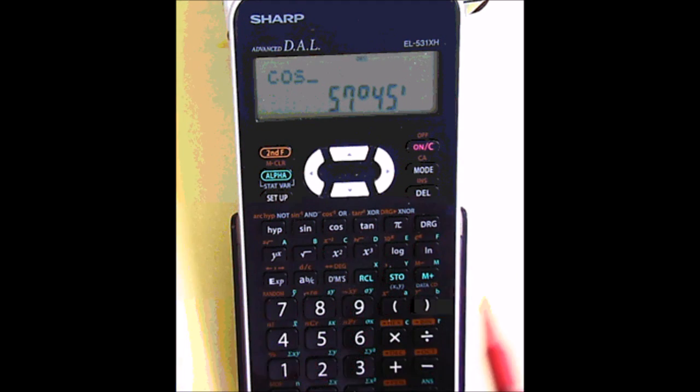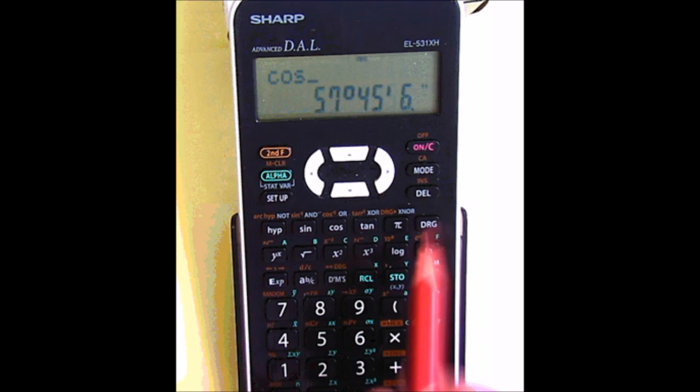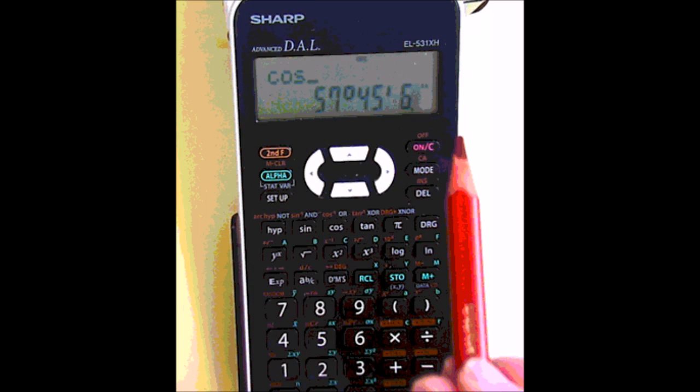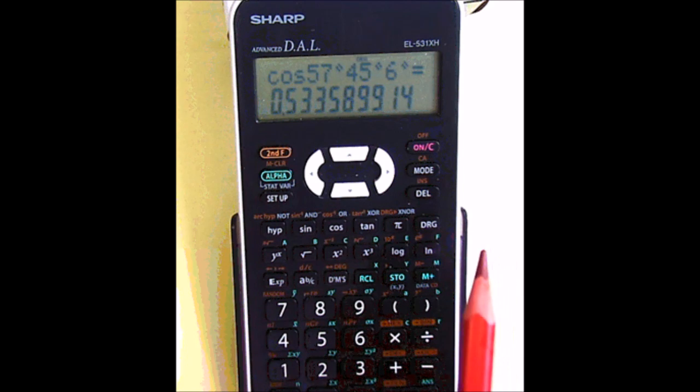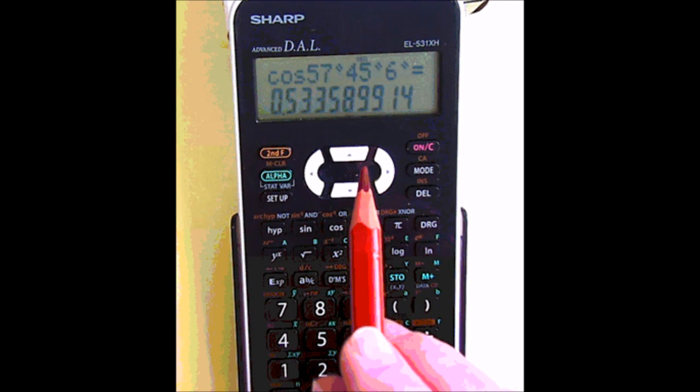If I wanted seconds, suppose it was 6 seconds. Hit the 6, and if I hit the degrees, minutes, seconds button, we have degrees, minutes, seconds. Hit equals and there's the cosine of that angle.